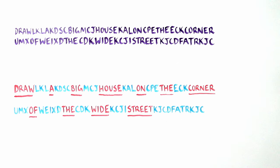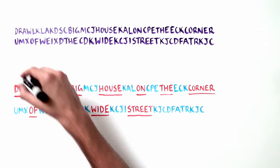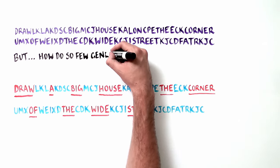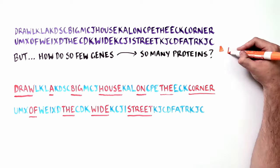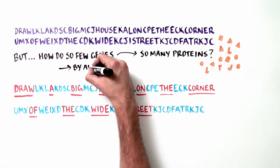Now that we understand how proteins are made from DNA and RNA, let's get back to our original question: How do so few genes produce so many different proteins? The answer is by alternative splicing of a gene's RNA message.